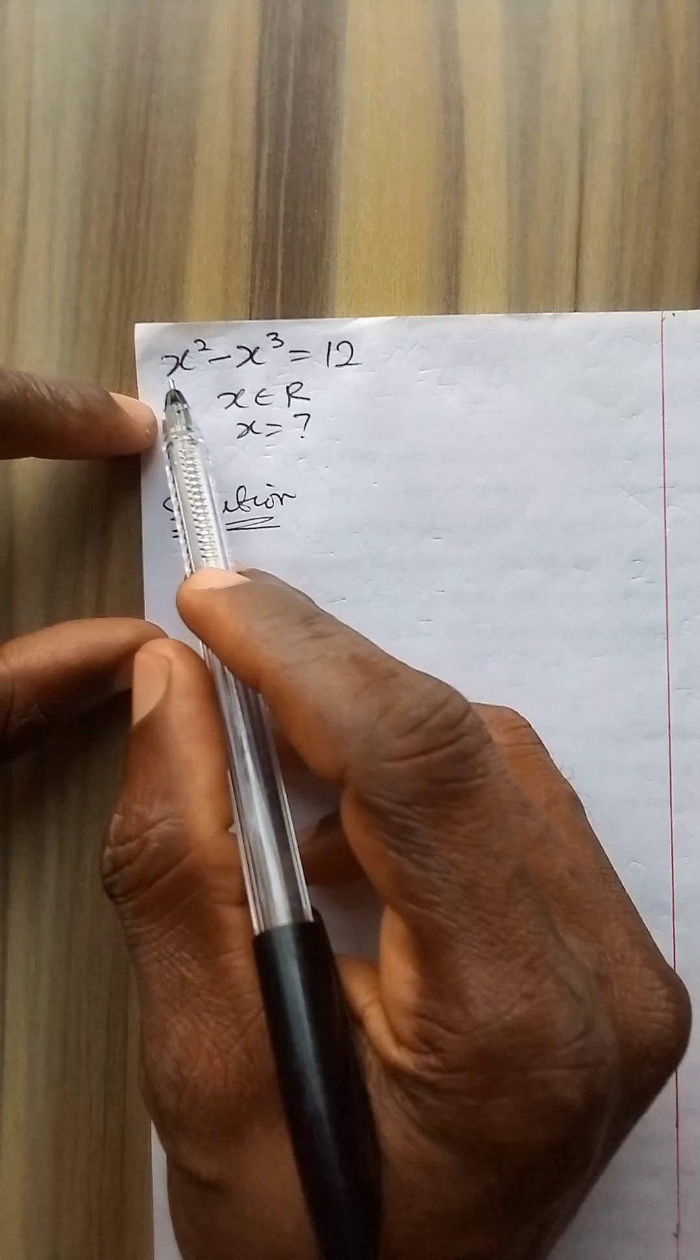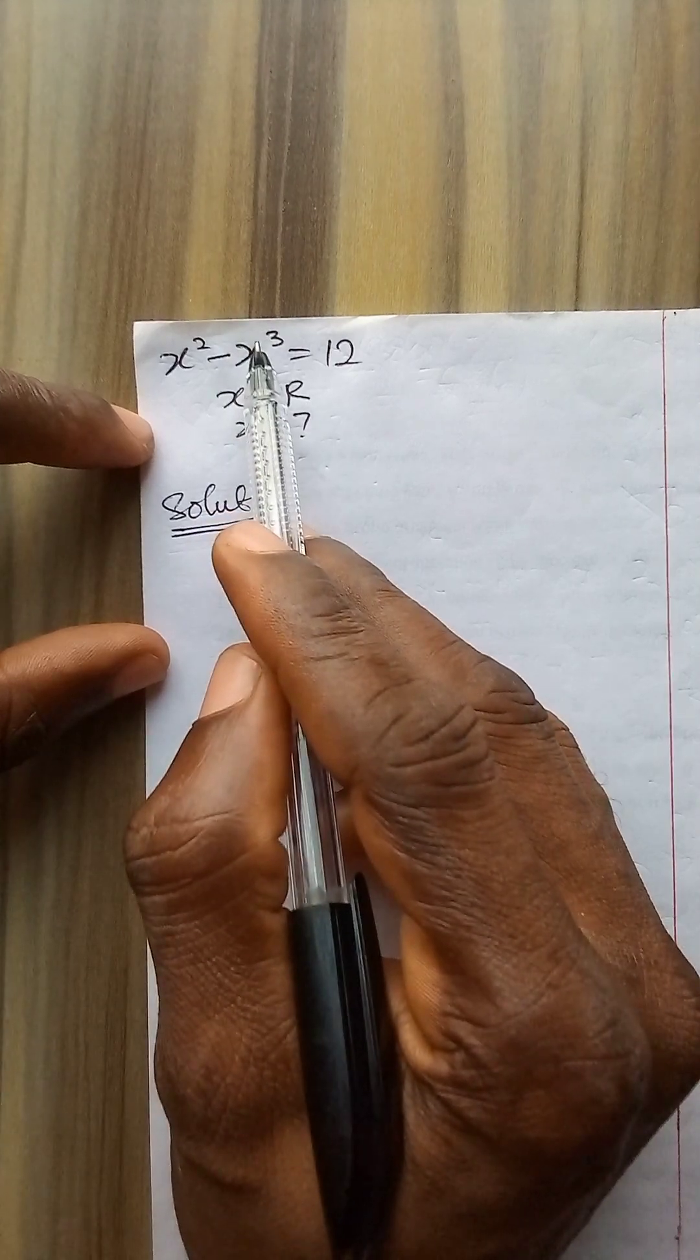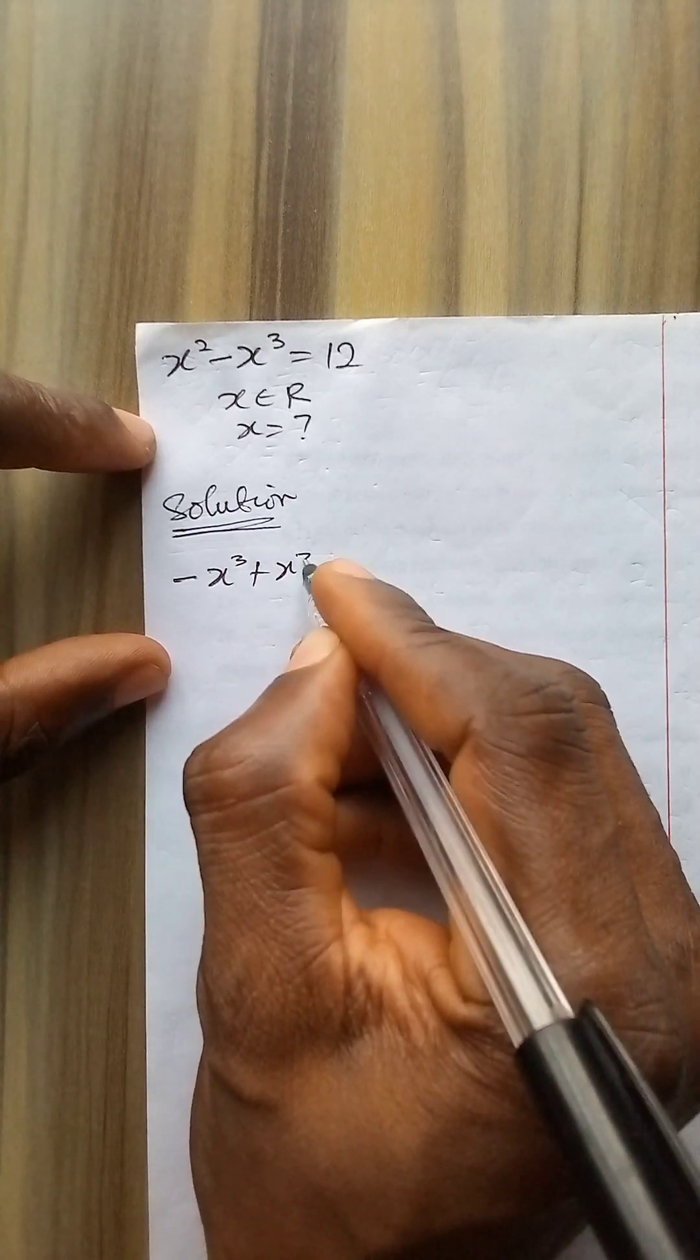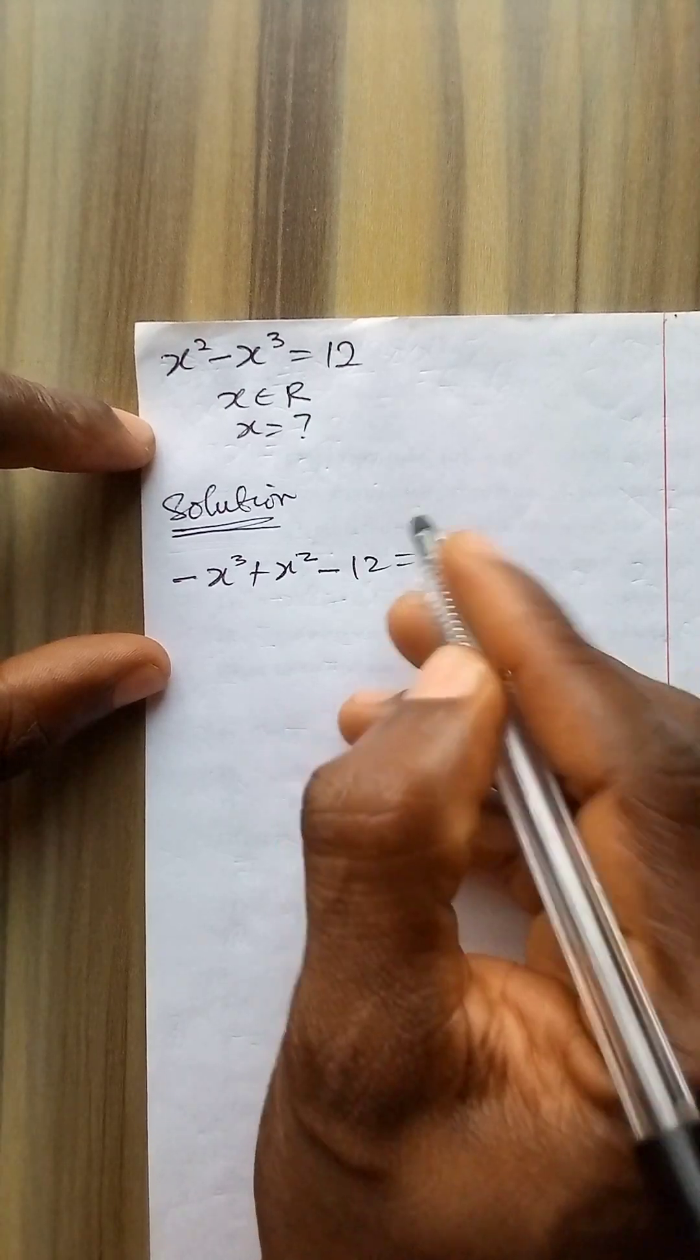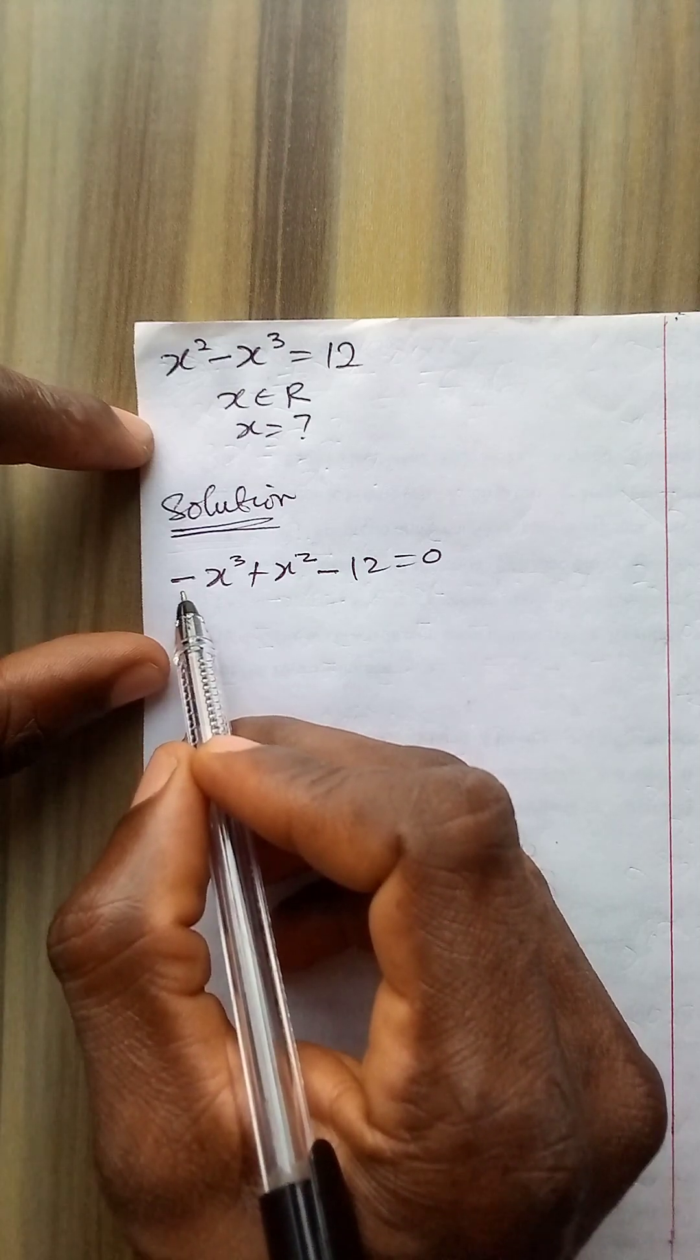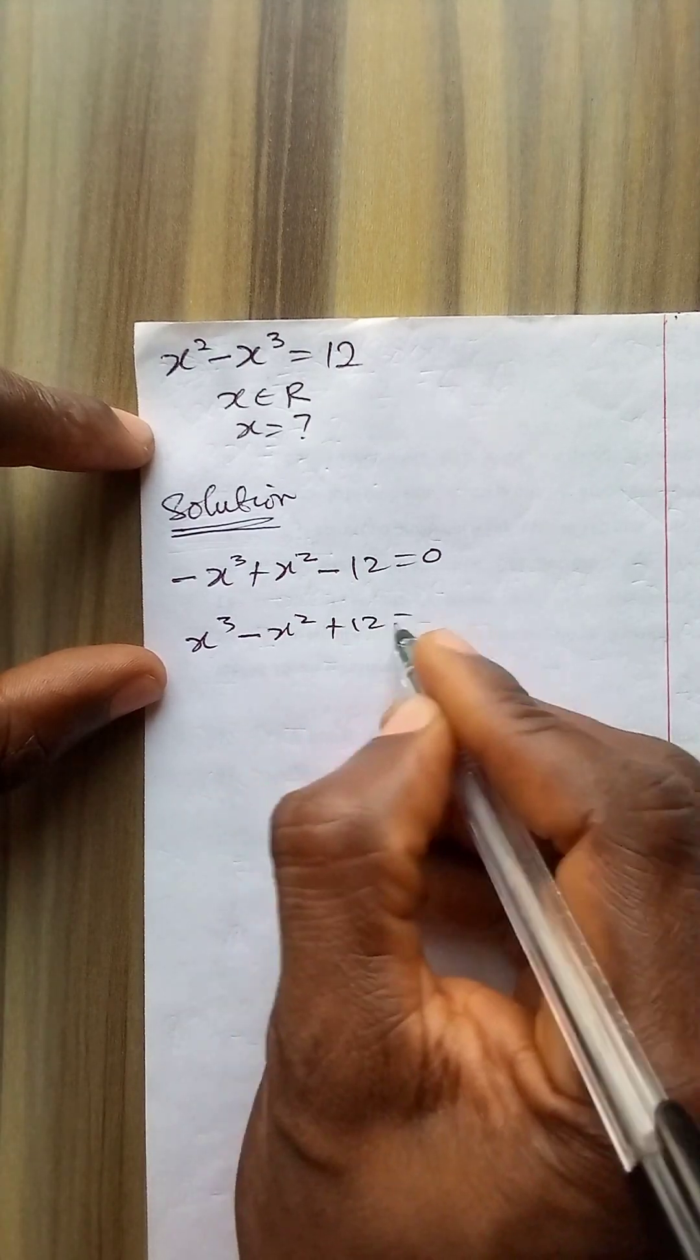Now to solve it, let us rewrite this equation such that the highest power of the unknown variable will become the first term. So I have minus x cube plus x squared minus 12 equals 0. If I multiply through by minus 1 to make this sign positive, I have x to power 3 minus x squared plus 12 equals 0.